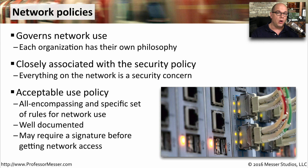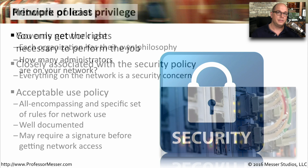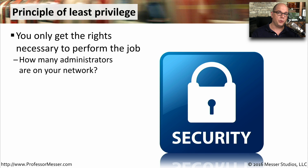These network policies are usually written together and presented as an acceptable use policy. This provides you with all of the rules and everything you'll need to know about sending information over the network. It's usually well documented, and it's very common for employees to sign a document saying that they have read and understand the acceptable use policies. The types of rights and permissions you have to resources on your network are usually based on who you are and the type of job you're doing.